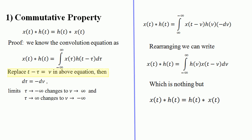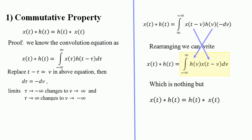With the substitution t − τ = μ, we get τ = t − μ and dτ = −dμ. The limits change: as τ → −∞, μ → +∞, and as τ → +∞, μ → −∞. Substituting, we get the integral from ∞ to −∞ of x(t − μ) h(μ)(−dμ). Reversing the limits removes the minus sign, giving the integral from −∞ to ∞ of h(μ) x(t − μ) dμ.